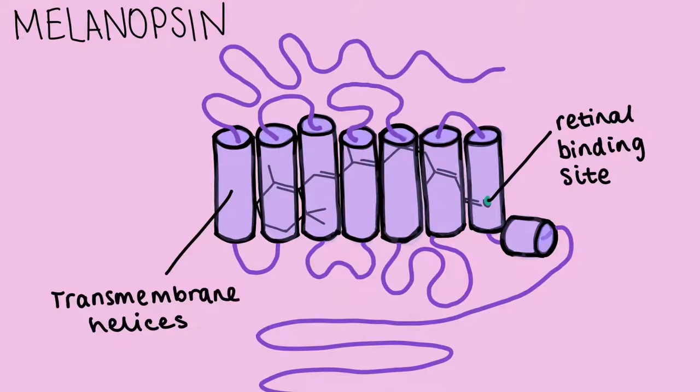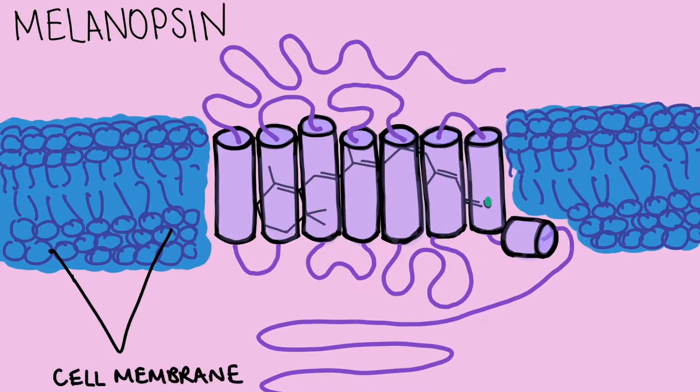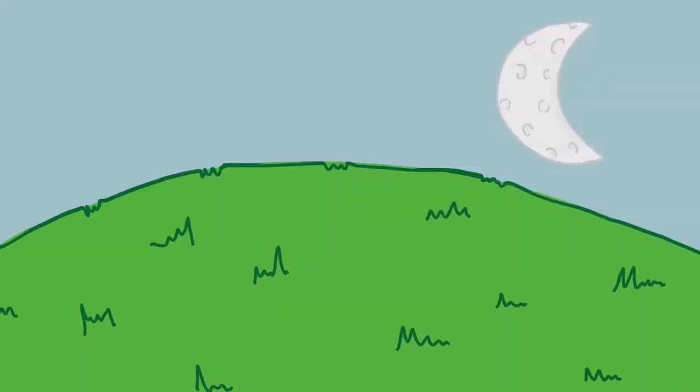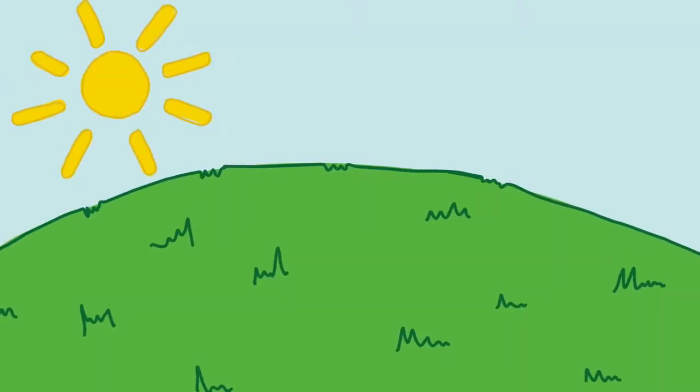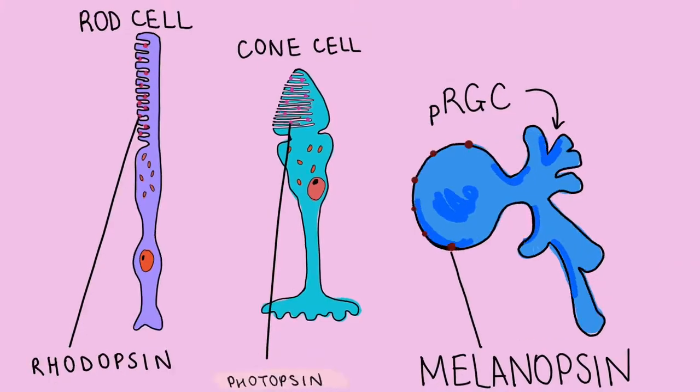Melanopsin is sometimes called a non-visual opsin. This means it can detect changes in light signals but not quickly enough to provide vision like the opsins found in other retinal cells. So instead it can detect light and dark and some patterns.